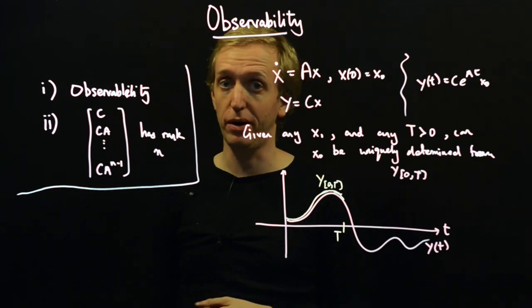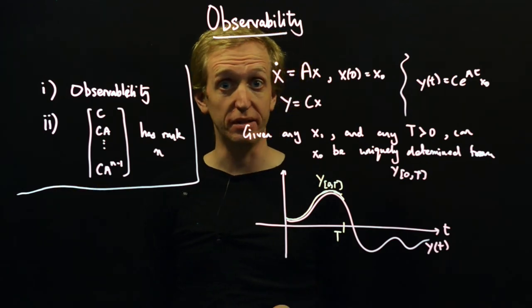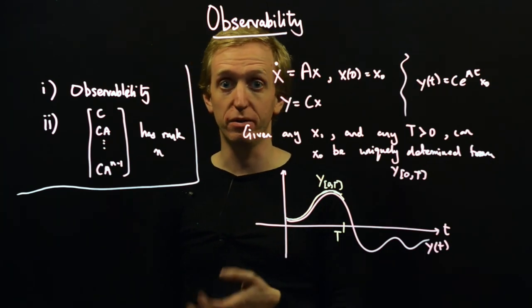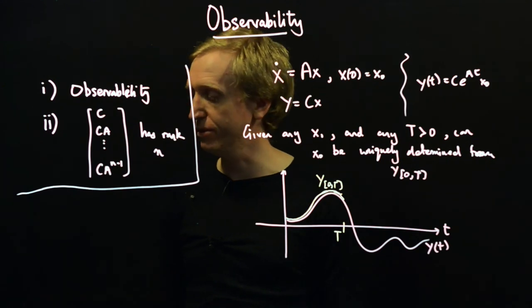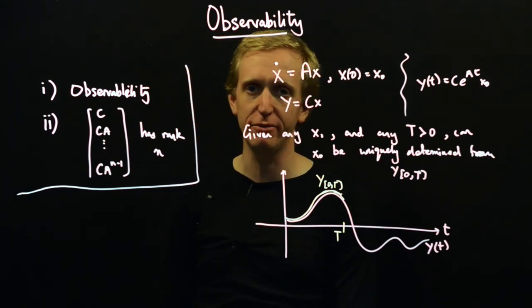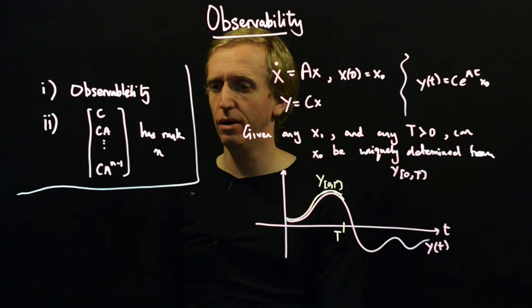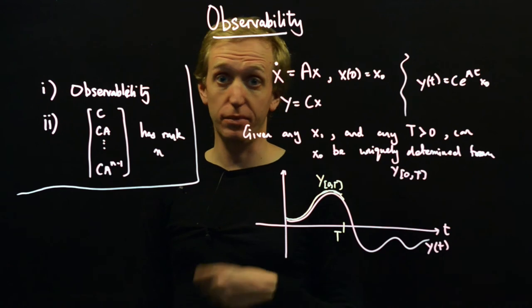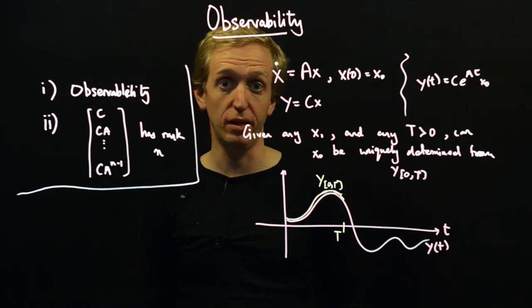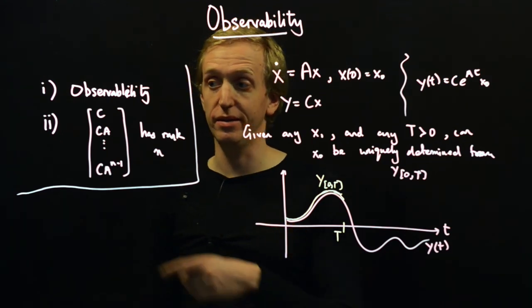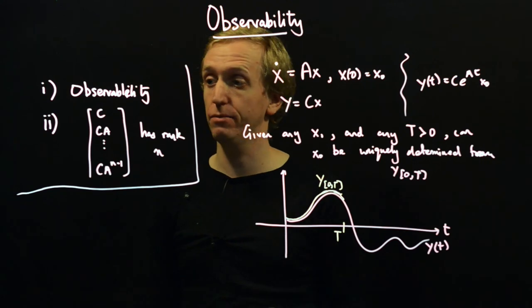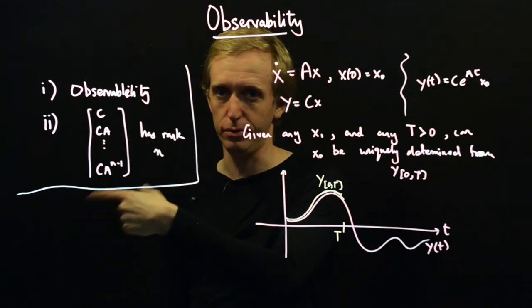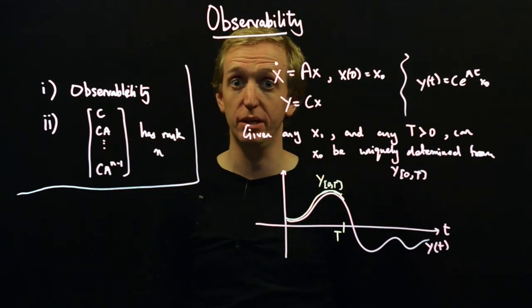So this is sort of the classic observability test. We could have written down part three involving the observability Gramian as well. We could have written down a part four with a Popov-Belevitch-Hautus test as a further set of equivalent statements. You've got a little bit more information on this in the lecture slides.